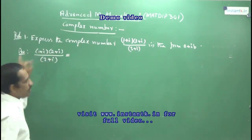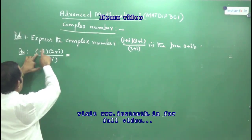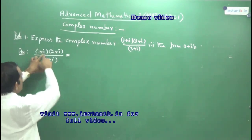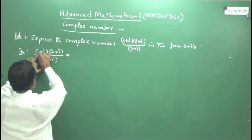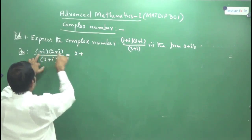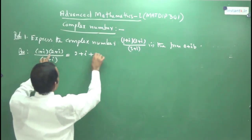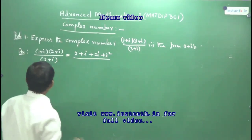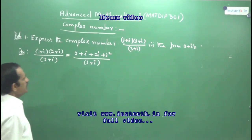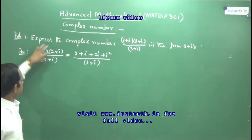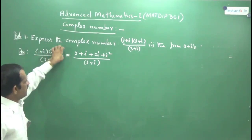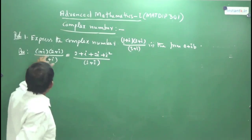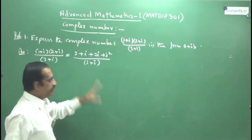To expand (1+i)(2+i): multiply 1 by 2 and 1 by i, then multiply i by 2 and i by i. You get 2 + i + 2i + i². It is very important to put brackets around each complex number while writing steps. Combining the i terms: i plus 2i gives 3i. And i squared must always be remembered as minus 1. So 2 + 3i + i² becomes 2 + 3i − 1, which equals 1 + 3i.